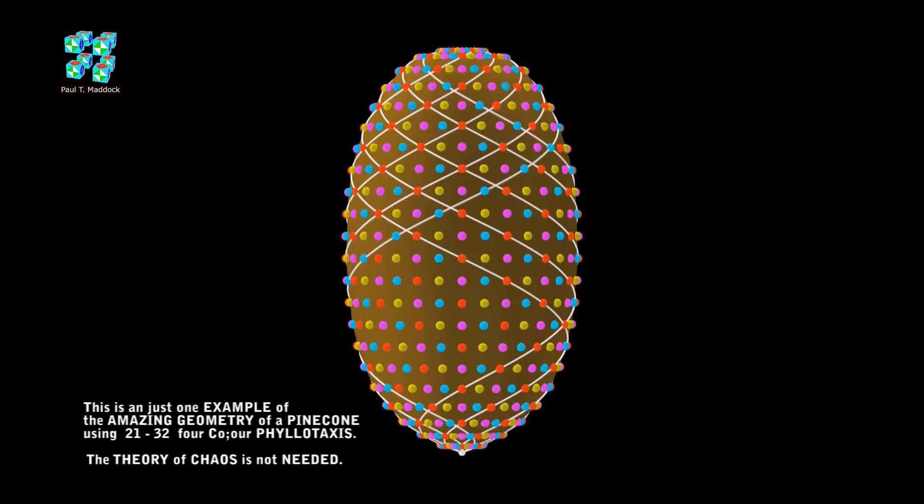Now if you look at the rhombus shape between the red balls, there are three balls vertical and five balls horizontal. That's Fibonacci numbers.